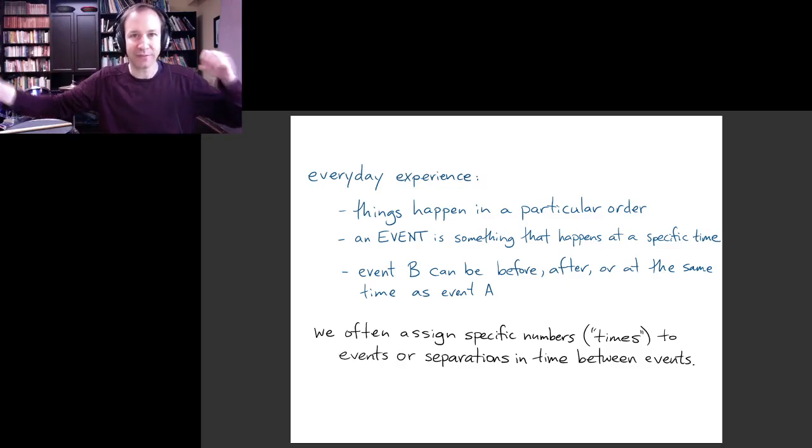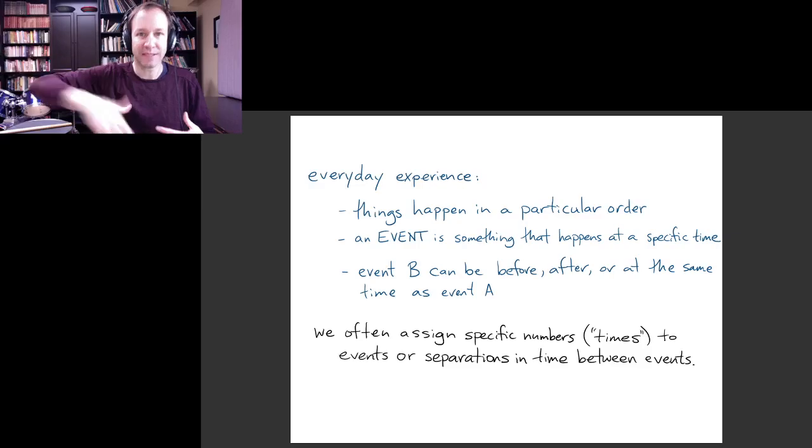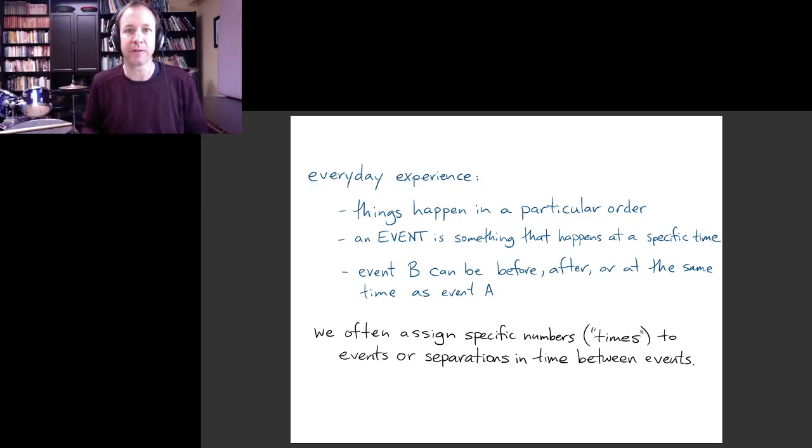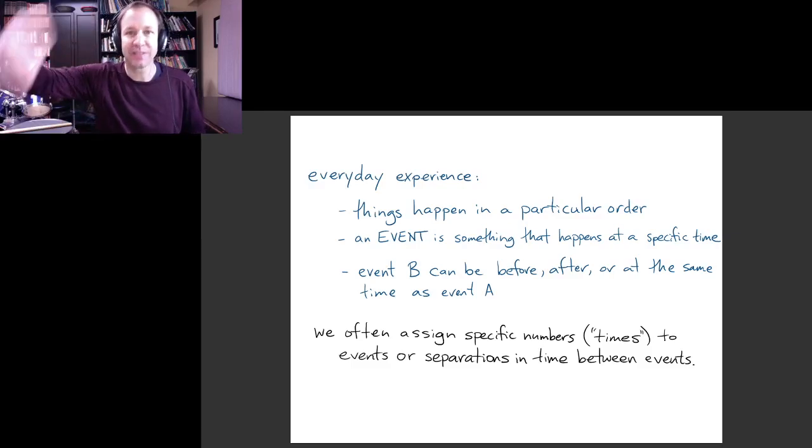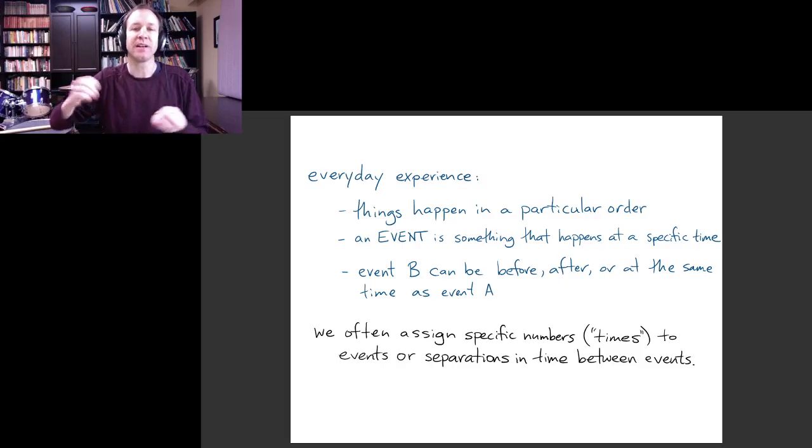Even outside of our experience, we believe this is true in our world - that we have things happening at various locations and we can make an ordering of them. Some are after and some are before. We also get quantitative about it and assign numbers to these various events, where the higher number would mean that the event happens after and the lower number would mean the event happens before. These are the things that we call times.